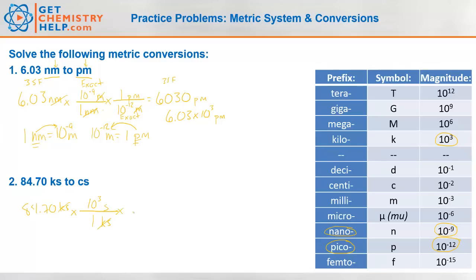So now we've got rid of kiloseconds, and we've got seconds on top. We need seconds down here, and we're going to centiseconds. What's centi mean? Centi means 10 to the negative 2nd. A centisecond is 10 to the negative 2nd seconds. So we'll put a 1 up here, seconds cancels. Punch that in your calculator.